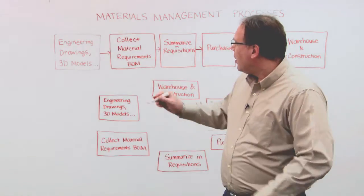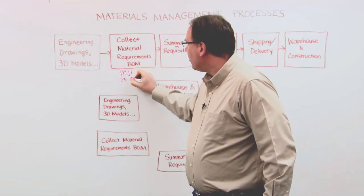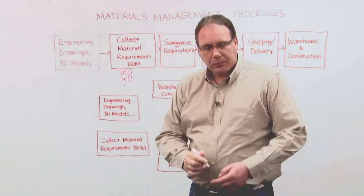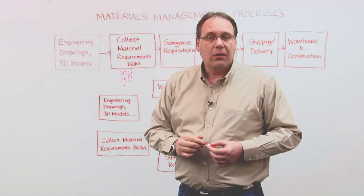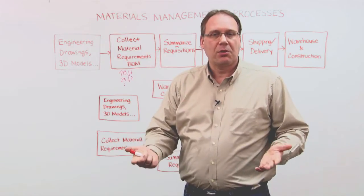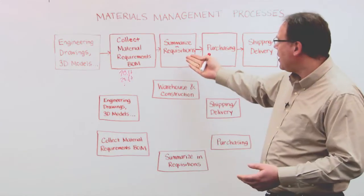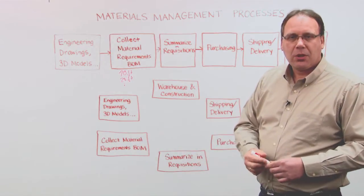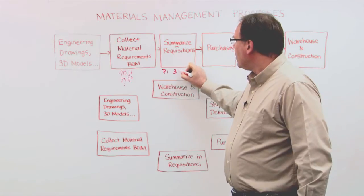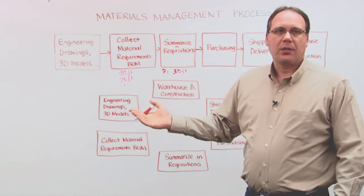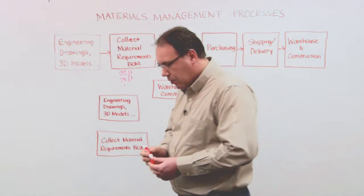So I can say I have here 10 feet of pipe and 20 feet of pipe and so on. Now you want to summarize all these material requirements into requisitions. So the next step is you summarize materials into requisitions and say I want to buy 30 feet of pipe. Pretty easy, pretty straightforward.